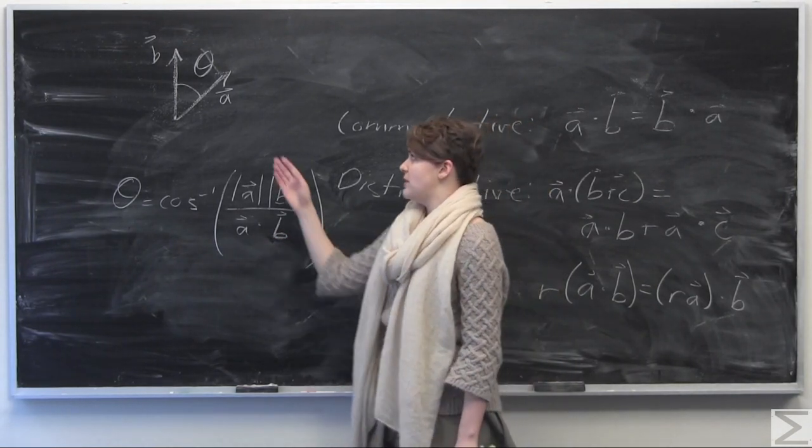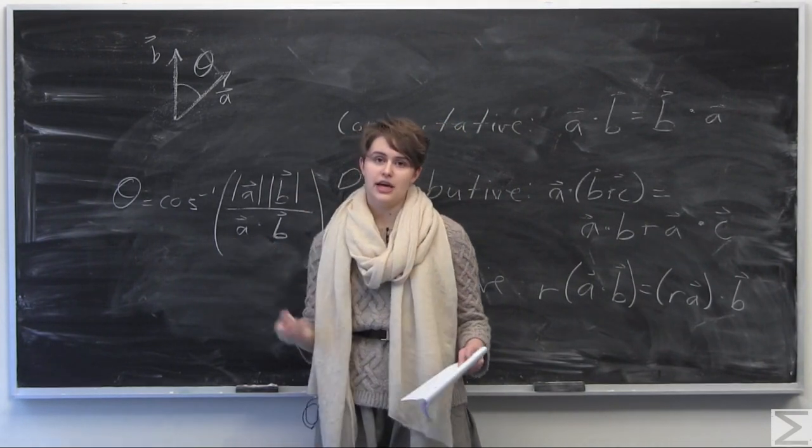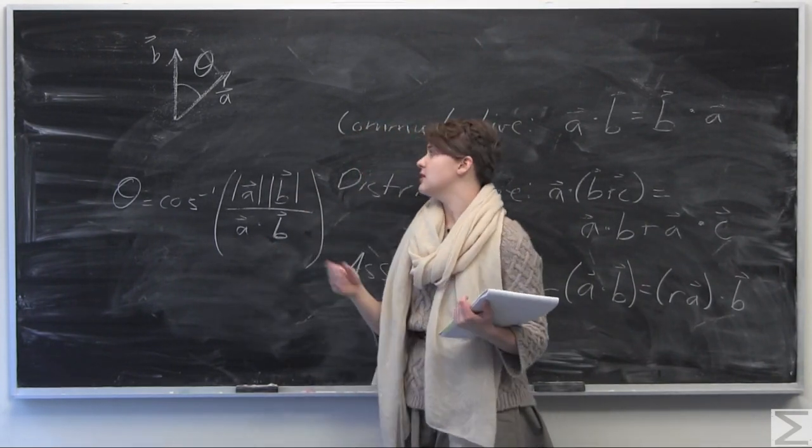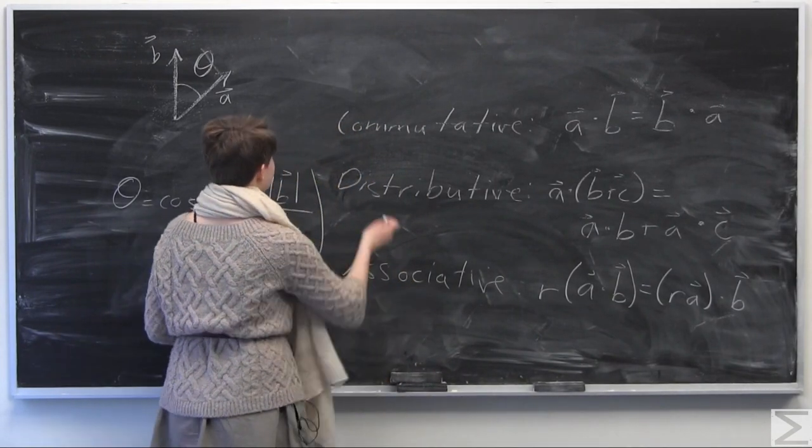So this very essential formula that you need to know is theta is going to be equal to the inverse cosine, or arc cosine you might know, of the magnitude of A times the magnitude of B all over the dot product of A times B. So the dot product is just going to be the components multiplied together, as you've seen in the pre-calculus study guide, or blueprint, excuse me, but if you haven't.